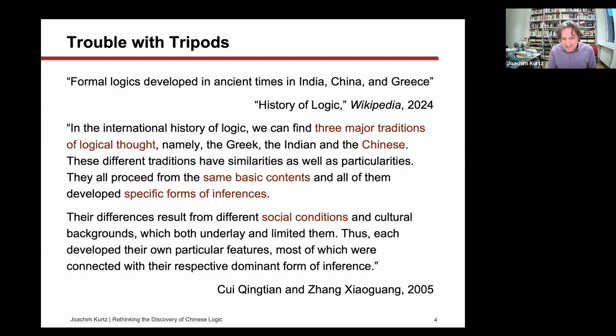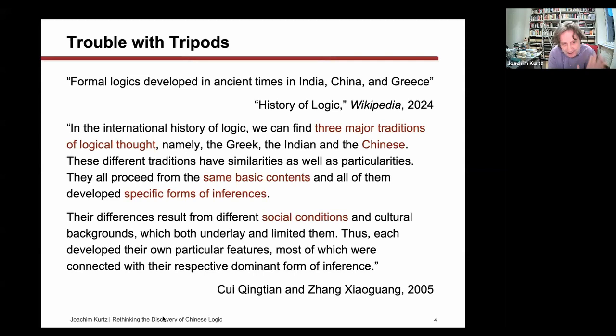Sometimes a bit more is said about this tripod. For instance, by Cui Qingtan of Nankai University, who says that in the international history of logic we find three traditions—the Greek, the Indian, and the Chinese. These traditions have similarities as well as particularities; they all proceed from the same basic contents and developed specific forms of inference. To understand the differences, we have to look into the social conditions and cultural backgrounds where they emerged. What I found surprising when I started working on this topic is how recent this understanding of three logical traditions is.